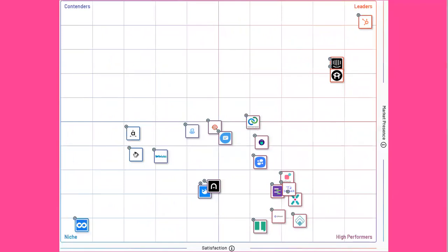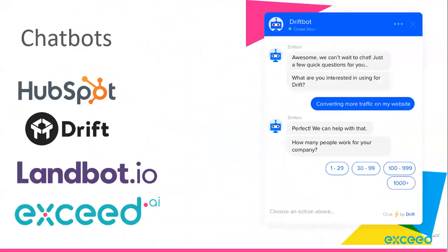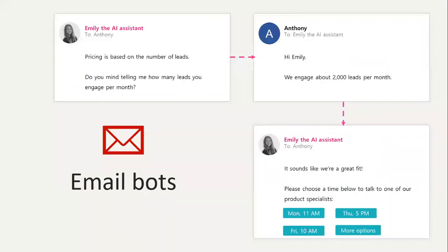Looking at the conversational marketing platform landscape, it's not a big market yet but it's getting there. There are a few big ones: HubSpot, Drift, Landbot, and the company I work for, Exceed — all providing chatbots, which are chat widgets that enable two-way conversation. That's what we think of as conversational marketing today — real-time interaction. But the next step is actually email bots, which Exceed also does, where it's a similar concept to the chatbot.